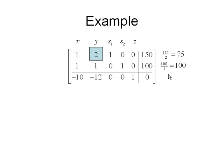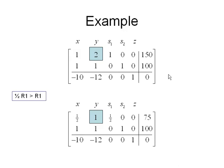So in the next step, I need to change that pivot from being a 2 to a 1. So I'm going to go ahead and multiply 1 half times row 1, put the result in row 1. And when I multiply that top row by a half, it becomes a half, 1, a half, 0, 0, and 75.